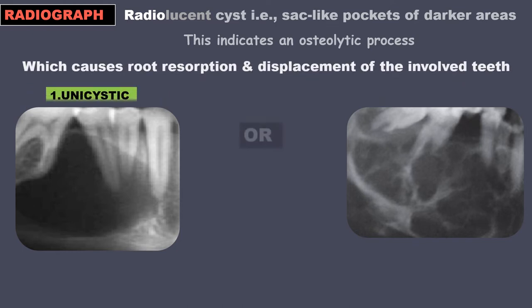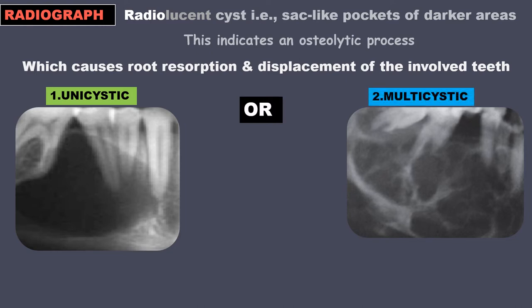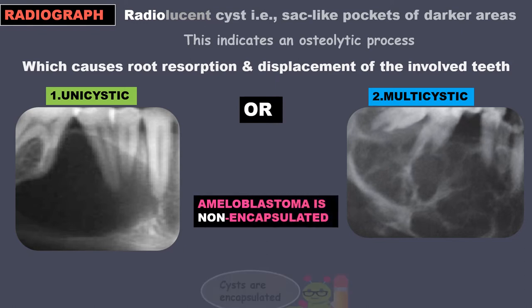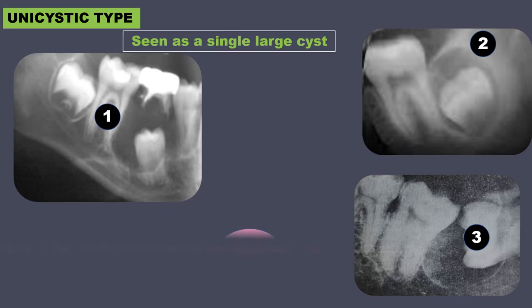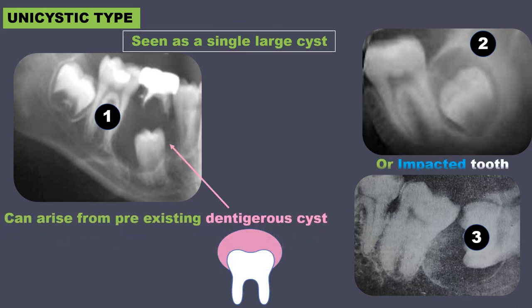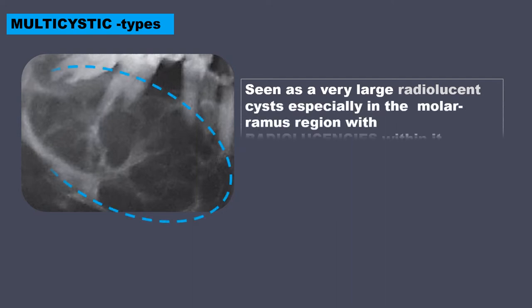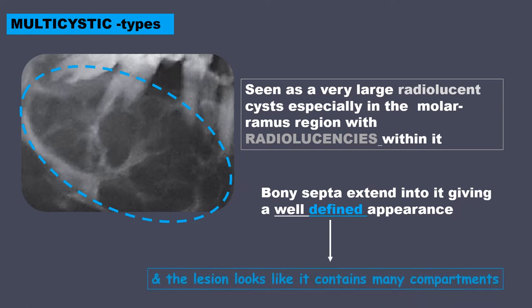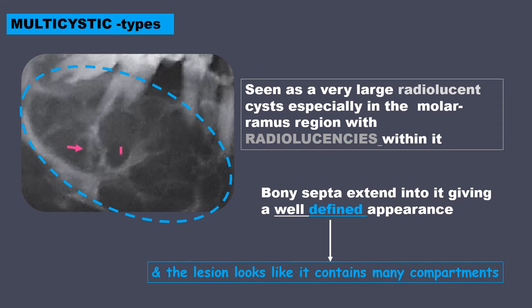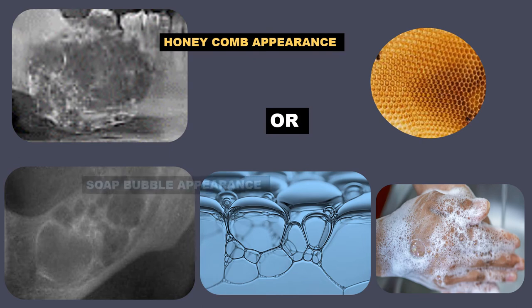This can be unicystic or multicystic. An important point to note is that though they are called cystic, ameloblastoma is non-encapsulated. The unicystic type is seen as a single large cyst which can arise from a pre-existing dentigerous cyst or impacted tooth. Multicystic types are seen as very large radiolucent cysts especially in the molar-ramus region. Bony septa extend into it giving a well-defined appearance, with many compartments or chambers — giving rise to a typical honeycomb appearance or soap bubble appearance.